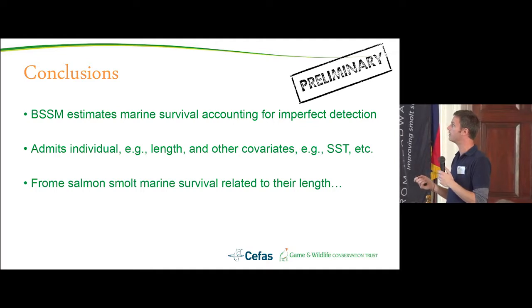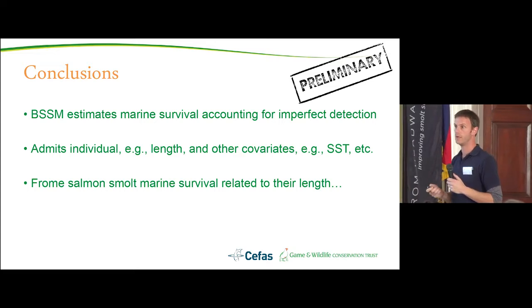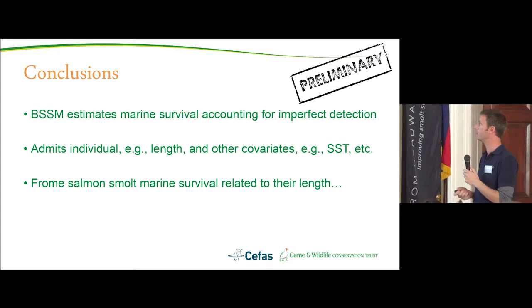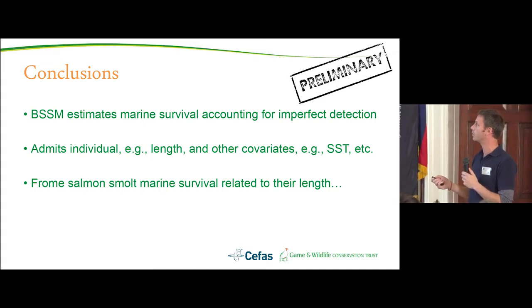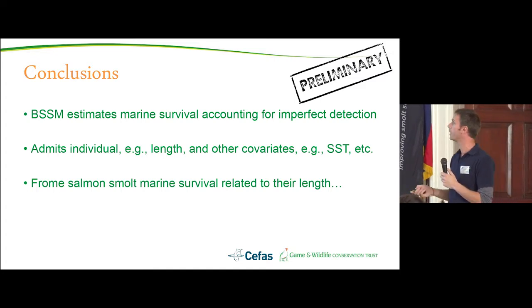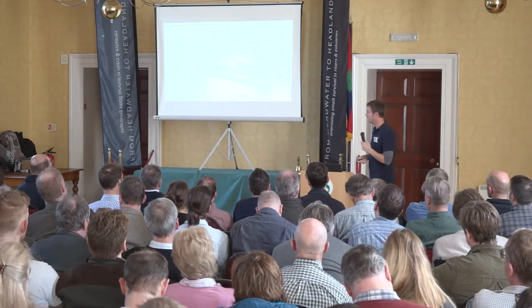In conclusion so far: this Bayesian state space model approach seems to work quite well, accounting for imperfect detection estimated directly from the data. It admits individual length information and will allow for other covariates such as sea surface temperature. We also find, albeit provisionally, that marine survival for Frome salmon appears to be weakly affected by smolt length at the time of leaving.